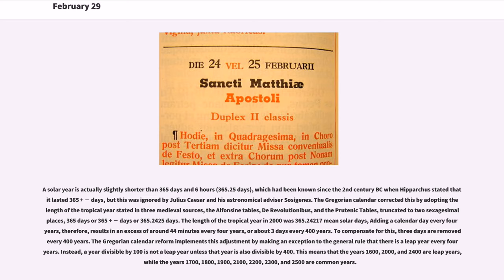This means that the years 1600, 2000, and 2400 are leap years, while the years 1700, 1800, 1900, 2100, 2200, 2300, and 2500 are common years.